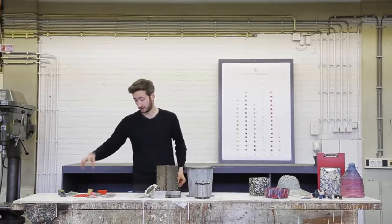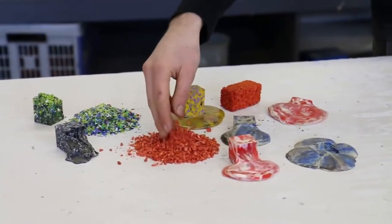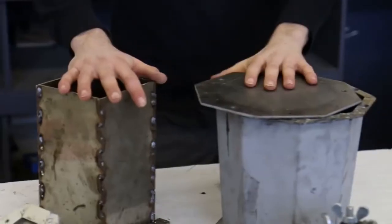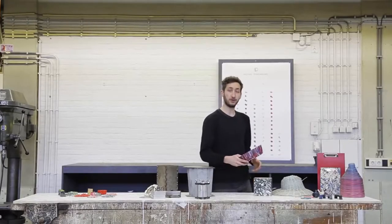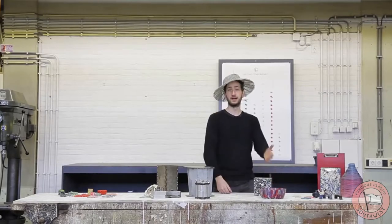So first we're going to talk a little bit about different melting temperatures of plastic. Then we're going to talk about mold making, how to make your own molds and what to look out for. And then we're going to create objects from plastic waste. Let's go!